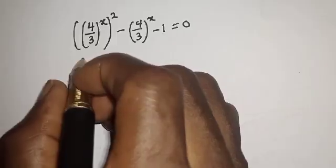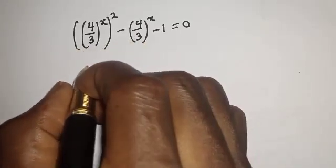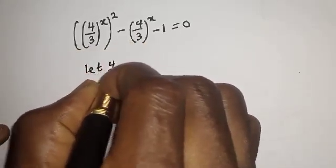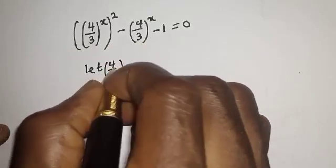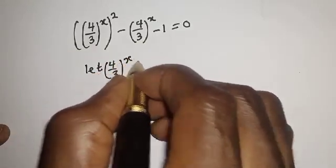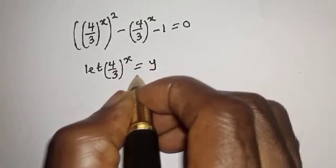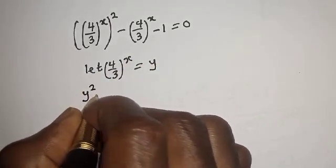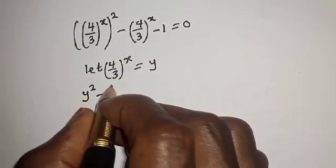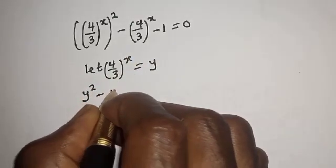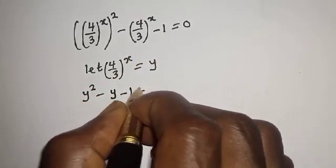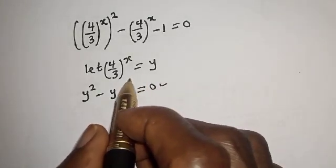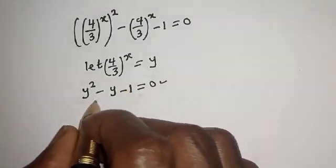Then from here we have 4 over 3 raised to the power of S, all squared, minus 4 over 3 raised to the power of S minus 1 is equal to 0. If you bring this 1 to this side, let 4 over 3 raised to the power of S equal to Y. Then here is Y squared minus Y minus 1 is equal to 0. This is a quadratic equation.